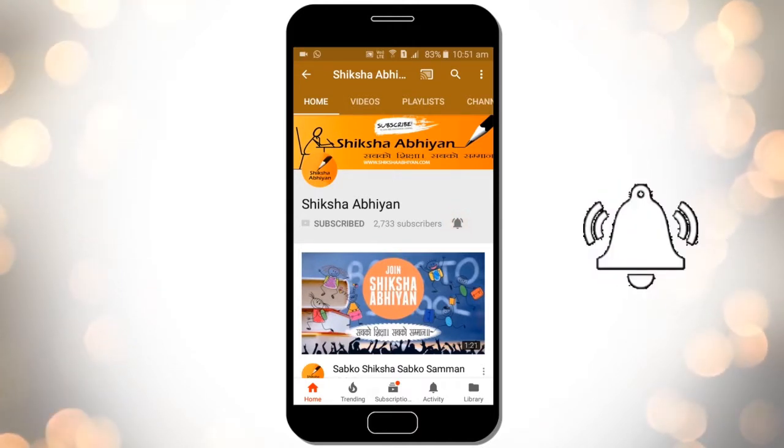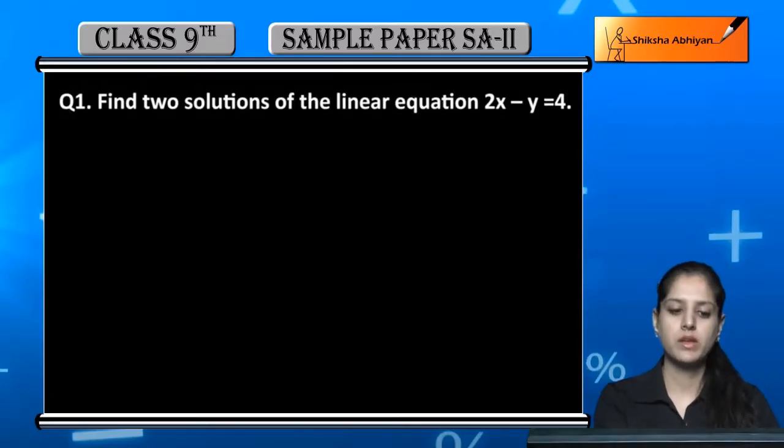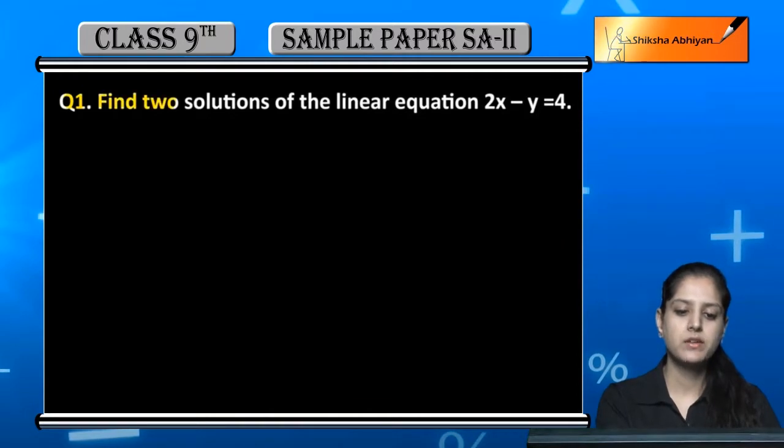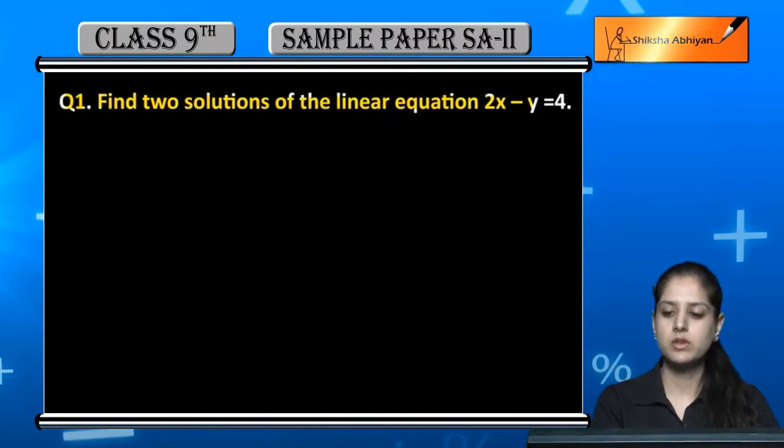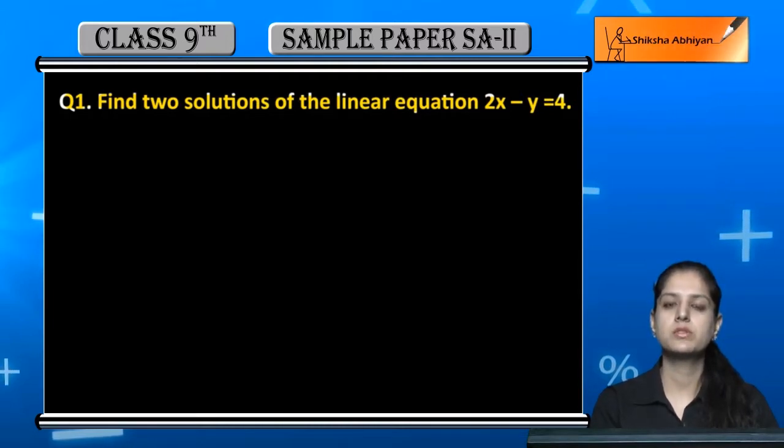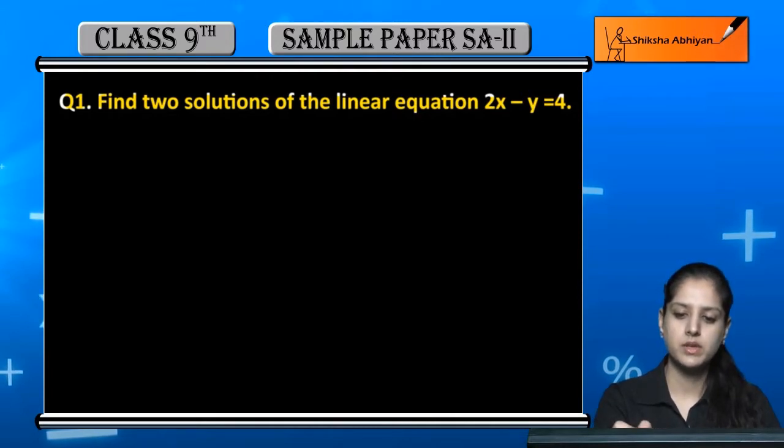Question number one: Find two solutions of the linear equation 2x minus y is equal to 4. Is linear equation ke hume do solutions nikal lena. Let us begin.